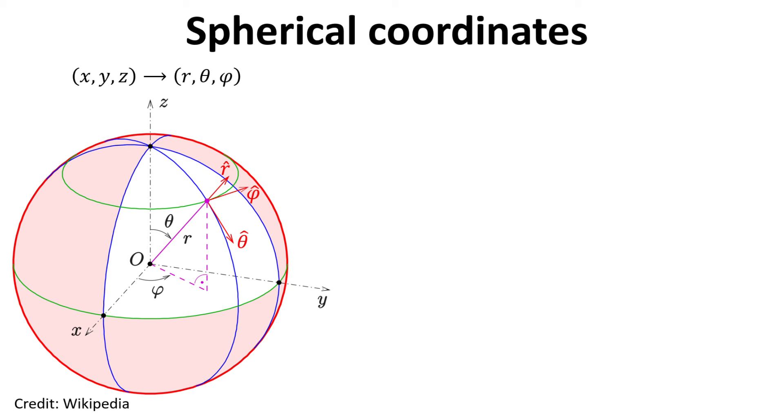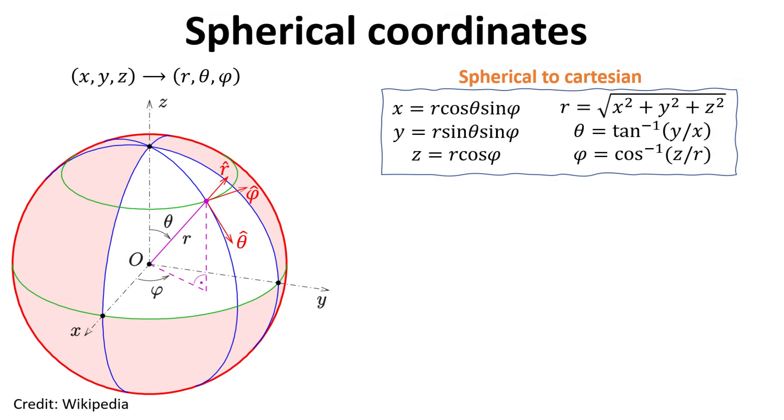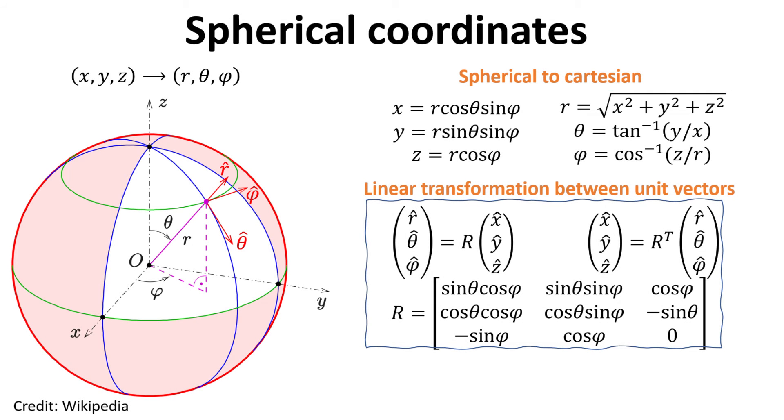A spherical coordinate system is a coordinate system for three-dimensional space where the position of a point is specified by three numbers. First, we have the radial R, which is the distance of that point from a fixed origin. Second, we have the polar angle theta, which measures the angle with respect to the positive z-axis. Third, we have the azimuthal angle phi, which measures the angle of its orthogonal projection onto the xy-plane with the x-axis. The spherical coordinates are related to the Cartesian coordinates via the relations as shown. We can also define their respective spherical unit vectors as shown, represented with a symbol hat.